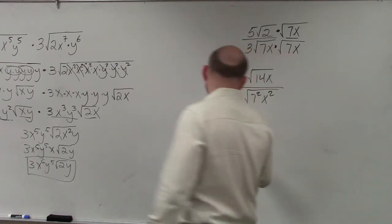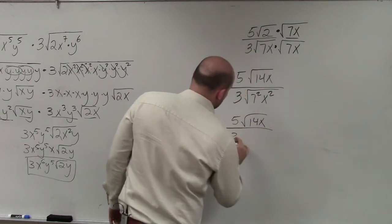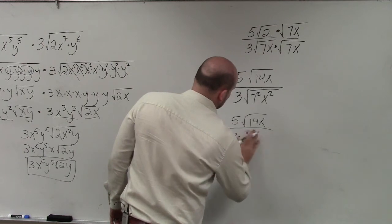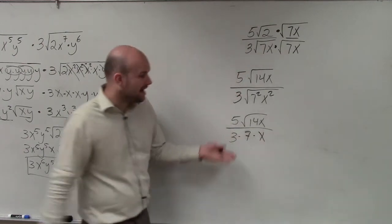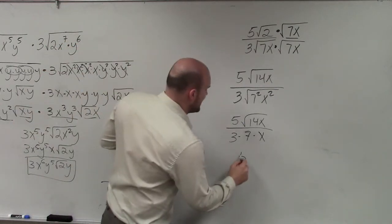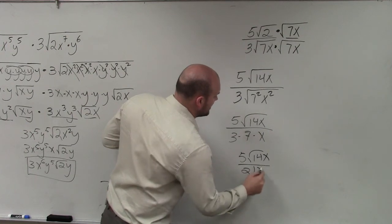So therefore, I have 5 over the square root of 14x, all over 3 times 7 times x. And now, I just multiply the 3 times the 7 is 5 times the square root of 14x, divided by 21x.